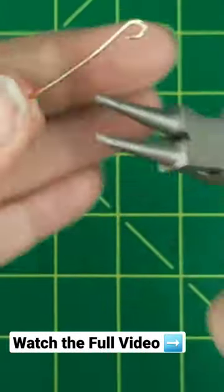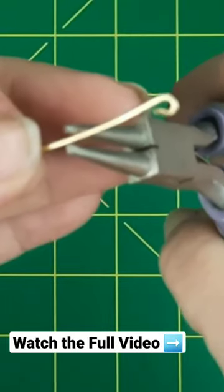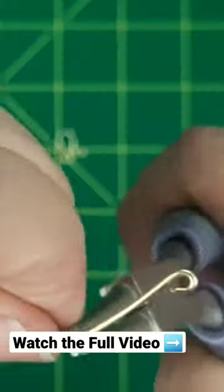The hook starts exactly like the eye by forming the eyelets first. Then I'm going to take the pliers and place the narrowest part of the pliers in the center of the wire.